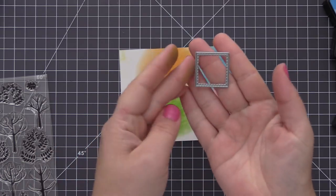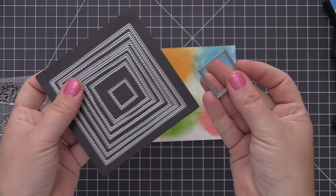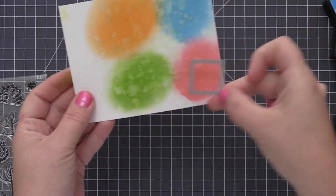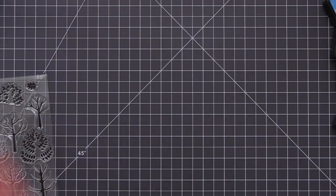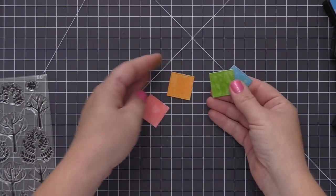I'm using the second smallest square from that same stitch square stacks dynamics and I'm going to cut a square out of each of the four colors that we've created on this panel. Then once I have them all die cut we're going to adhere them together into a bigger square and do some stamping directly on there.